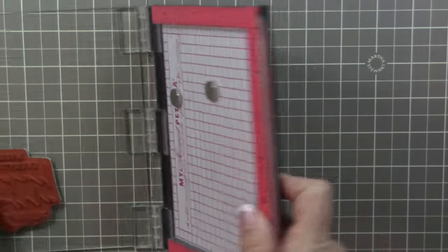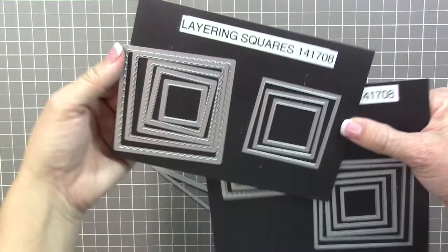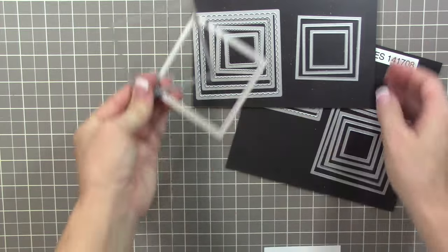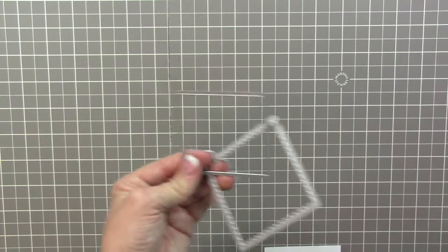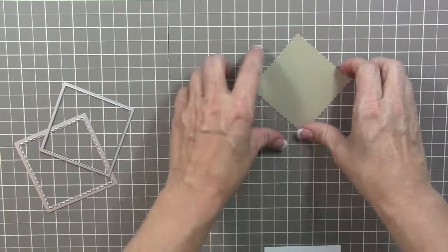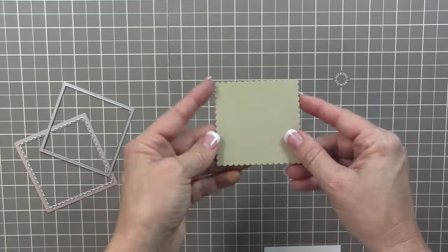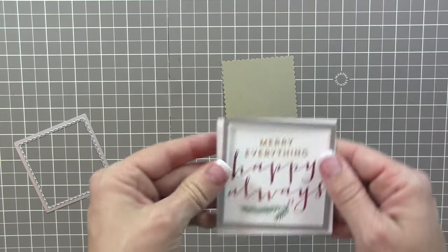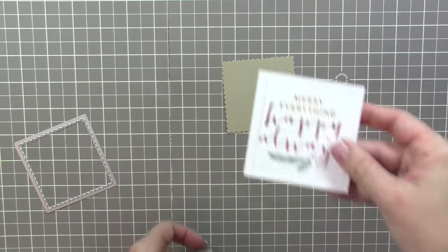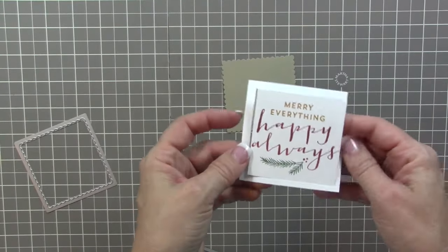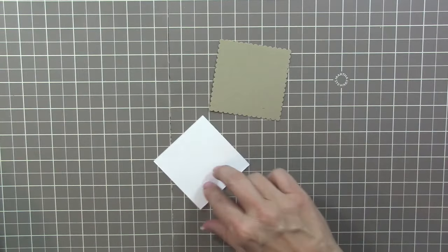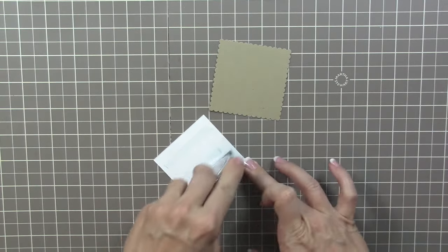Now what I'm going to do is I'm going to use our layering squares framelits and I've got the two sizes that coordinate. One's a scallop square and then one's just a plain square. I cut out the scallop square in Crumb Cake already, and then I'm going to take the plain square and cut out the stamp sentiment where it will fit perfectly on that scallop square. Just use your big shot die cut machine, and there you go. You see how it just layers perfectly and has just a little bit of the scallop border showing.